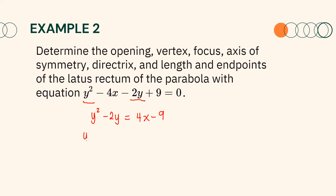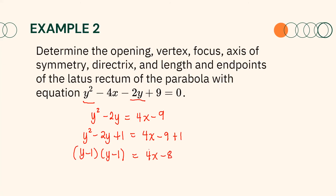Next, we complete the square on the left side of the equation. We have y squared minus 2y plus 1 equals 4x minus 9 plus 1. Remember that what is added to the left side must also be added to the right side. Factoring the trinomial gives (y minus 1)(y minus 1), and the right side becomes 4x minus 8. Expressing the factors as a square of a binomial gives (y minus 1) squared. Factoring out the coefficient of x on the right side gives 4(x minus 2). Therefore, the standard form is (y minus 1) squared equals 4(x minus 2).